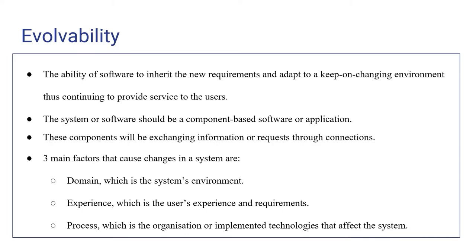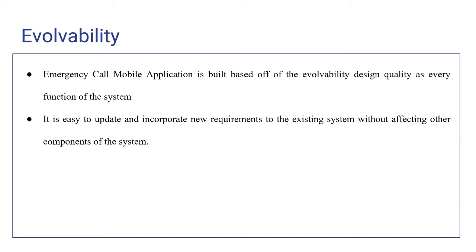This decreases the overall cost to maintain the system. The three main factors that cause change in a system are the domain, which is the system environment; experience, which is the user experience and requirements; and the process, which is the organization or implemented technology that affects the system. The emergency call mobile application is built based on availability design quality as every function of the system is built in component-based, connecting and sending requests to other components through connections.